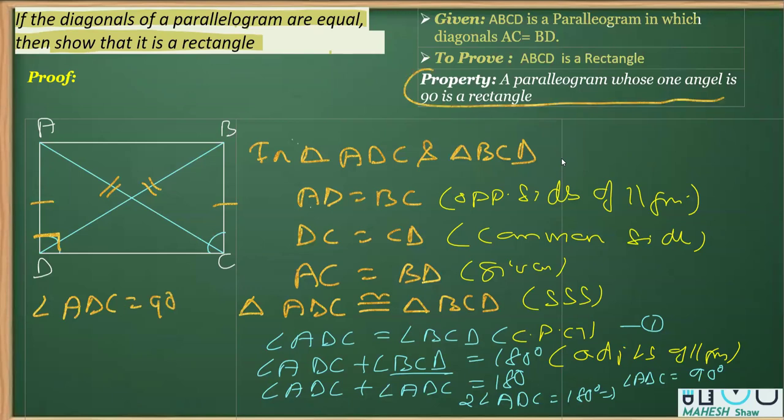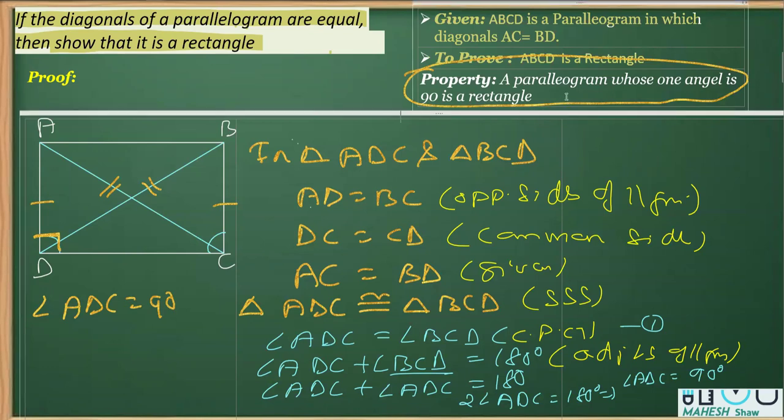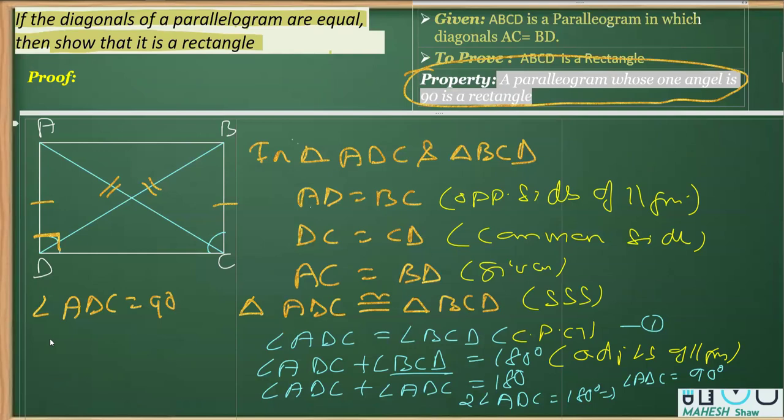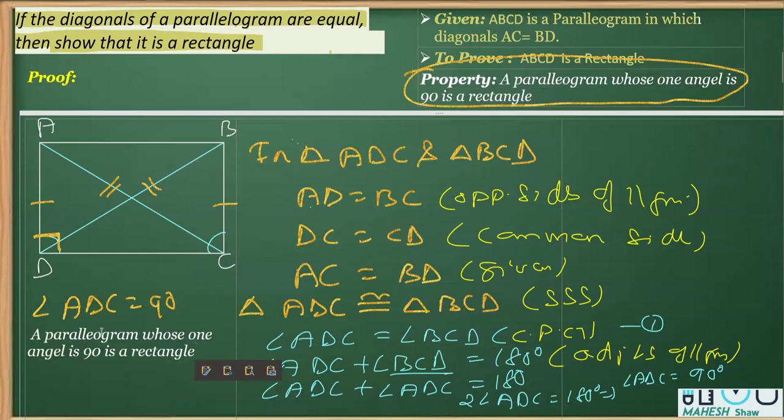After that, you simply need to write down this property that a parallelogram whose one angle is 90 degrees is a rectangle. So the property used here is a parallelogram whose one angle is 90 degrees is actually a rectangle. So it is necessary to mention the reason here.